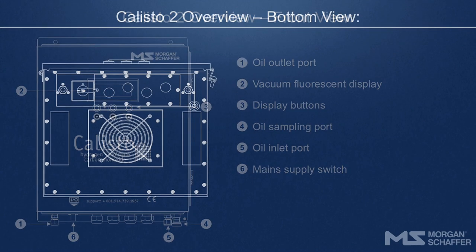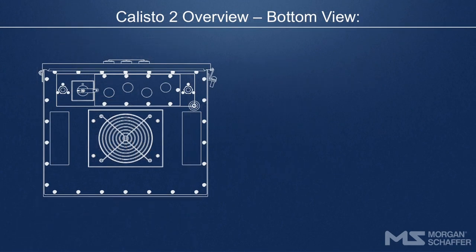This is an overview of the bottom view of a Callisto 2. The oil outlet port is visible from this perspective.